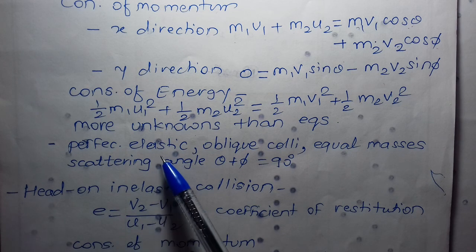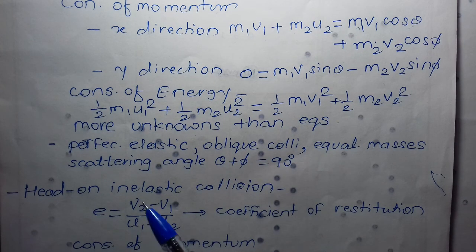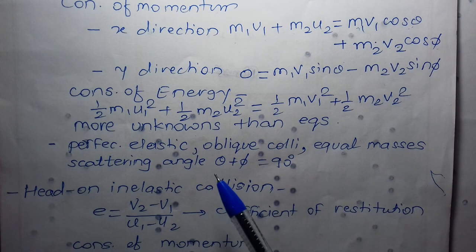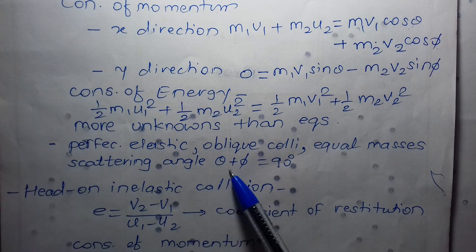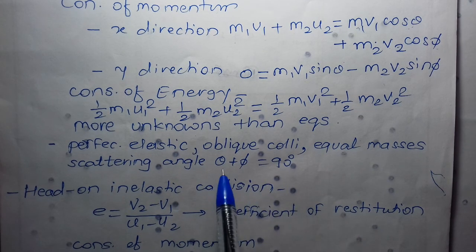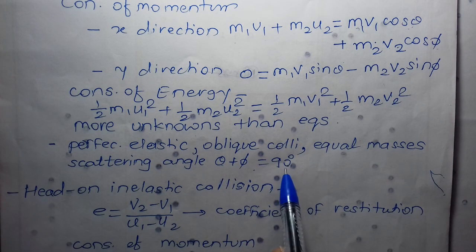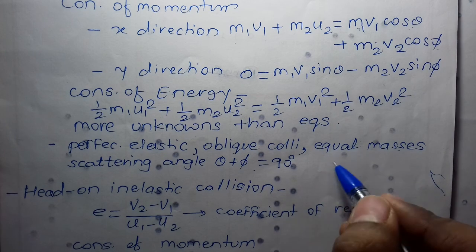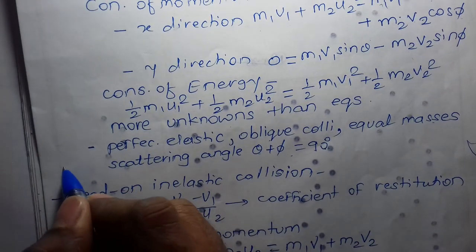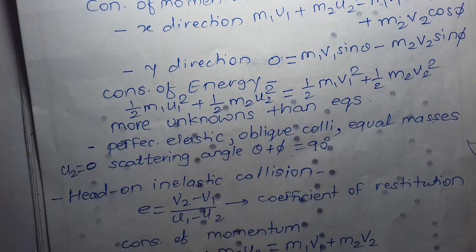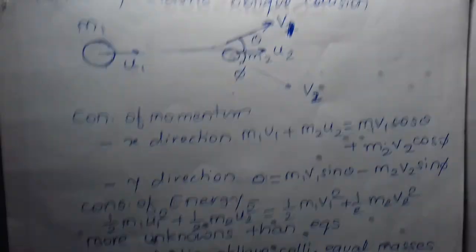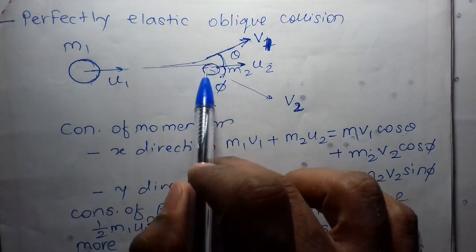For a perfectly elastic oblique collision of equal masses, the scattering angle theta plus phi equals 90 degrees. The conditions are: the collision must be elastic and oblique, the masses must be equal, and the initial velocity of the second mass u2 must be zero. Under these conditions, the scattering angle θ + φ = 90°.